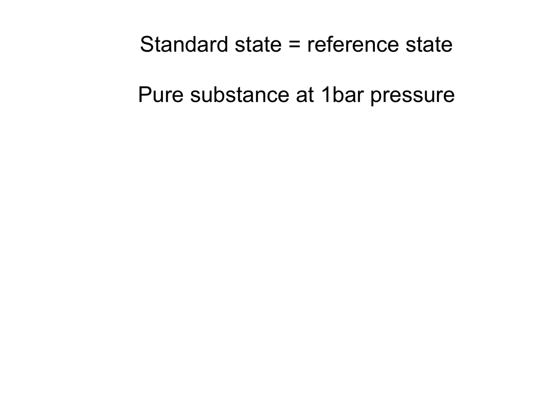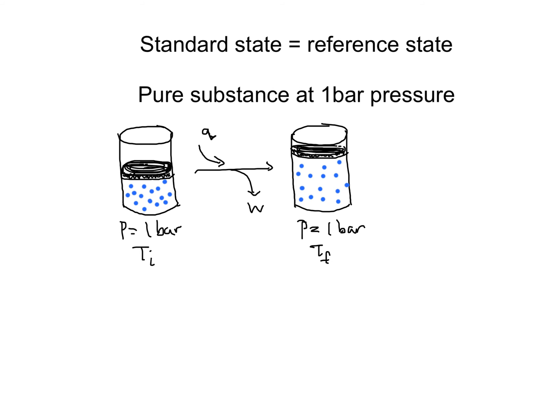Scientists have agreed to use the pure substance at one bar of pressure as the standard state. Notice that both our initial state and our final state are at standard state because they're both pure nitrogen gas at one bar of pressure.